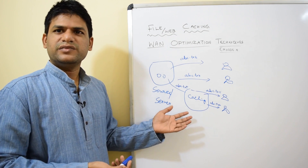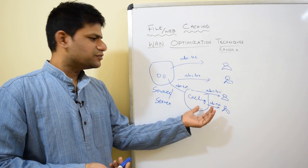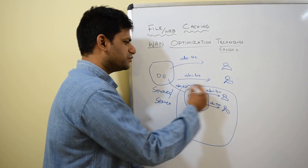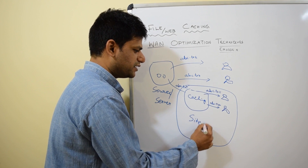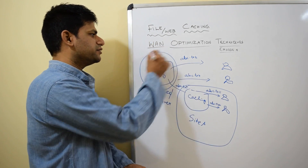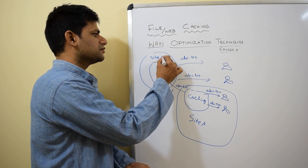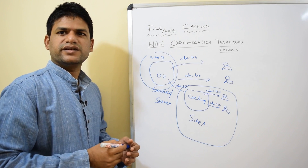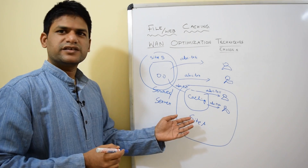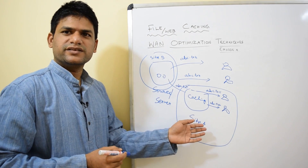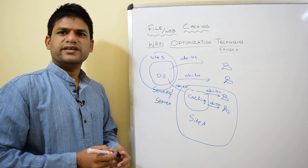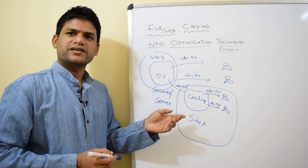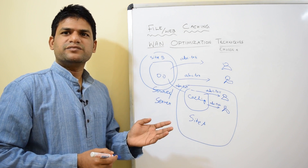File caching really saves a lot of data — these files can be several MBs or even GBs. Once pulled into your local cache, it can be your local office, say site A and site B, connected via internet or some sort of WAN network. It is going to be a great advantage, residing as a local copy and can be pulled any number of times once fetched from the main remote site.